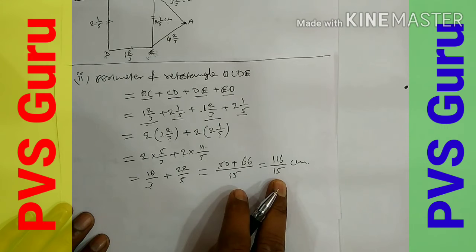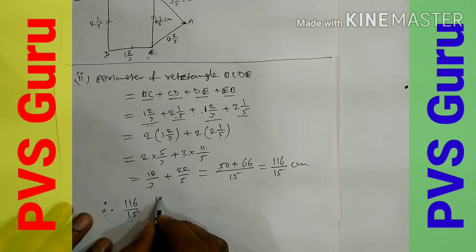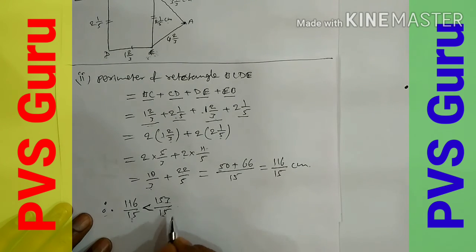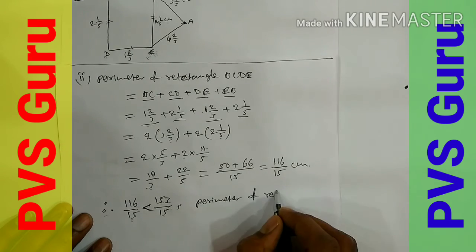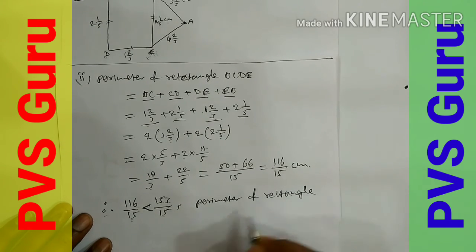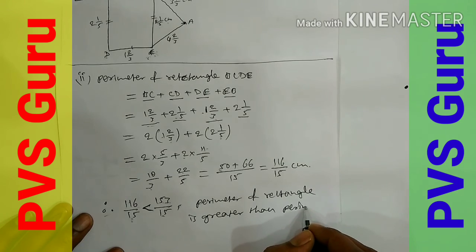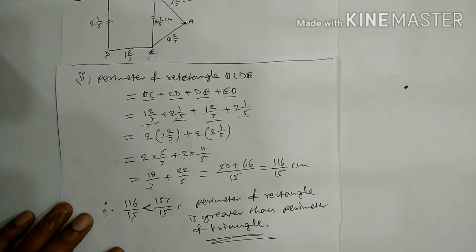Perimeter of rectangle BCDE = 116/15 and perimeter of triangle ABE = 153/15. Since the denominators are the same, we compare numerators: 116 < 153. Therefore, the perimeter of triangle ABE is greater than the perimeter of rectangle BCDE. The conclusion is that the triangle has a greater perimeter.